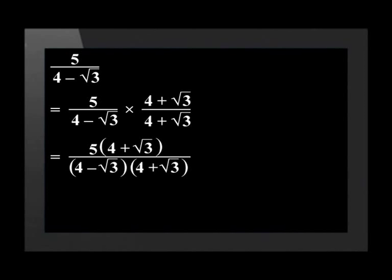This will give us 5 times 4 plus the square root of 3 over (4 minus the square root of 3) in the first bracket times 4 plus square root of 3 in the second bracket.